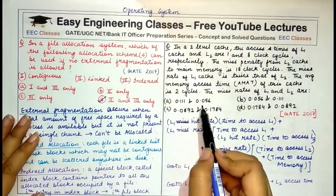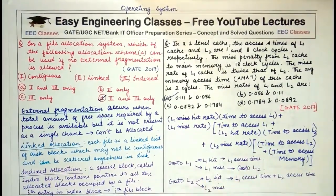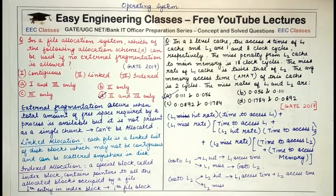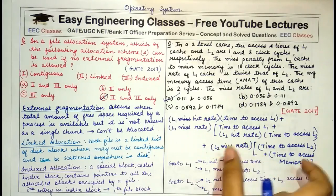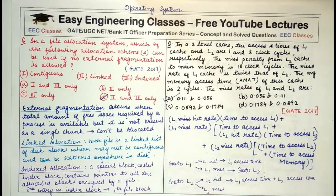I hope the formula is not too confusing. You can try to understand how a two-level cache works and verify whether the formula matches the explanation. That's all for today's lecture. Thank you for watching — stay tuned to Easy Engineering Classes for more lectures on GATE, UGC NET, and Bank IT Officer preparation series.